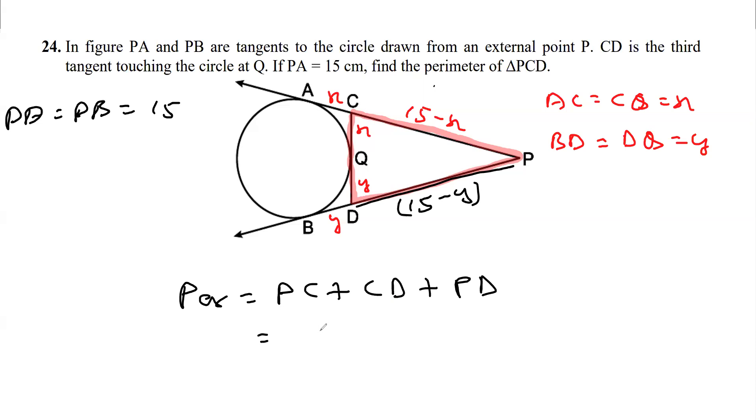What is PC here? As we can see from the figure, PC is 15 minus x. CD is x plus y.